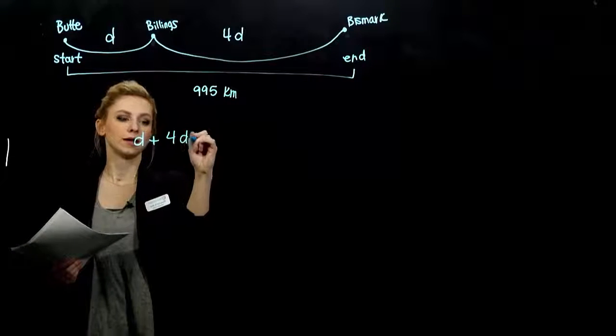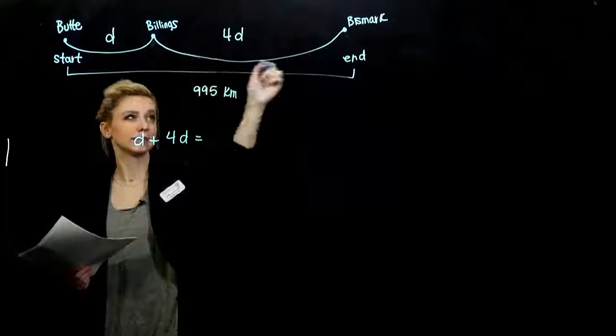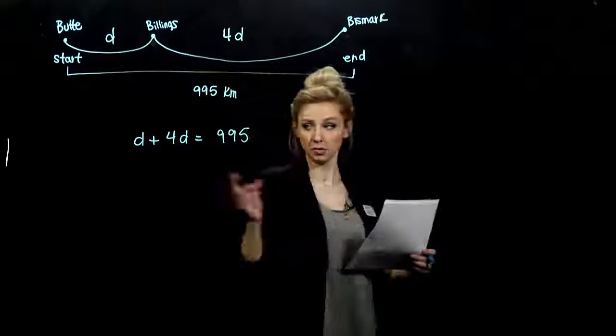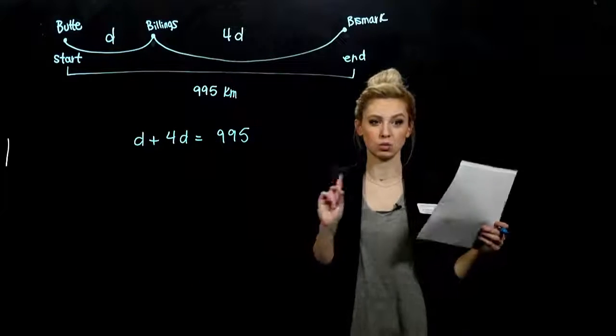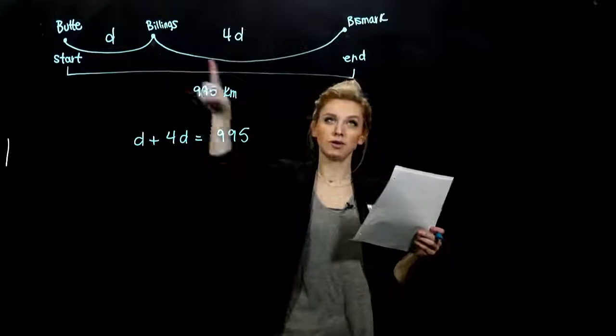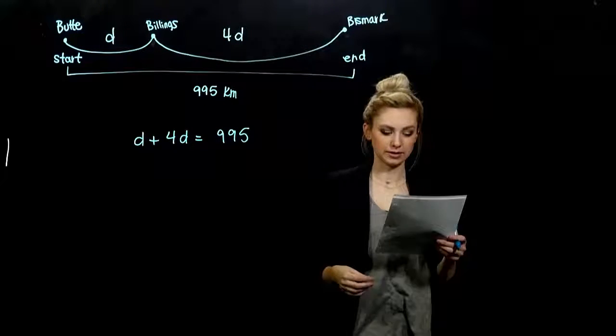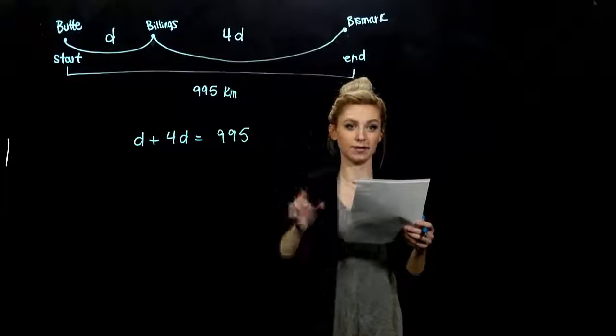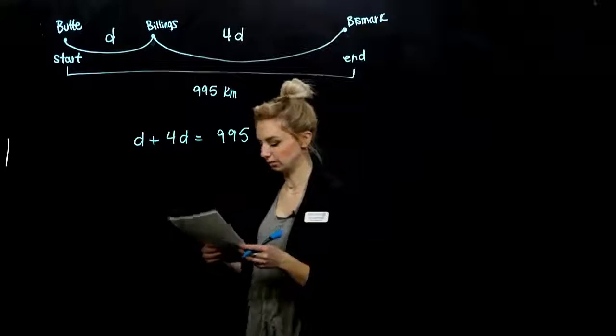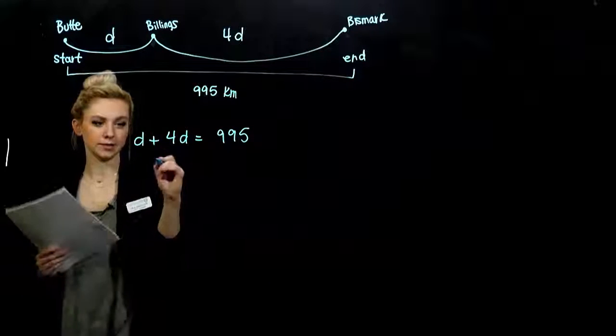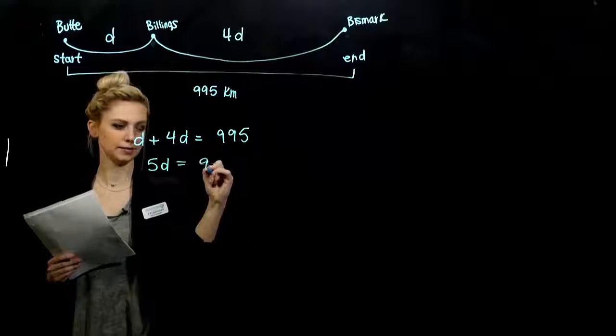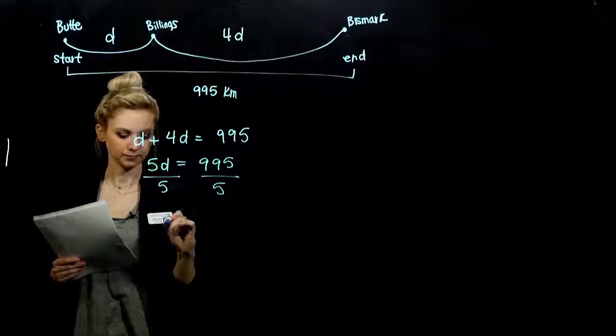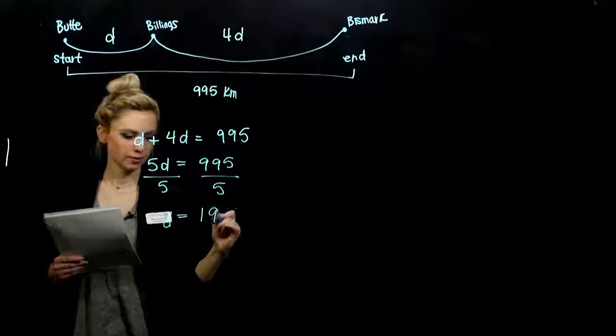Hopefully you can see where our equation is going to come from. Altogether, the distance from Butte to Billings and Billings to Bismarck is 995. And we have a relationship with those variables. So if I add them together, that distance and this distance totals 995. Let's solve. Combining like terms, I've got five factors of d, getting d on its own. D is equal to 199.